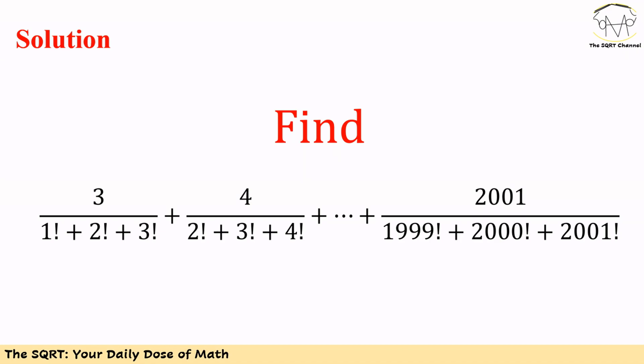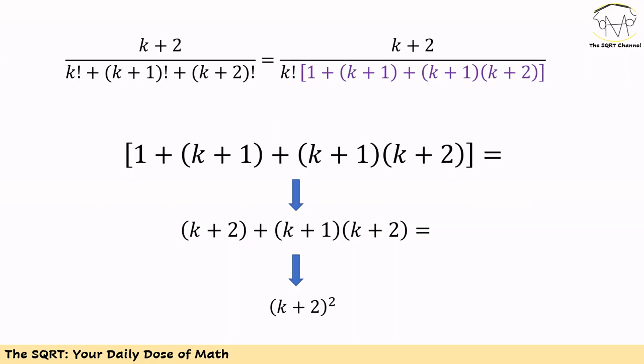Let's focus on the generic term: (k+2) over k factorial plus k+1 factorial plus k+2 factorial. We can factor out k factorial from the denominator, giving us k+2 in the numerator and k factorial times the remaining terms in the denominator.